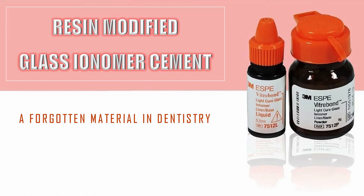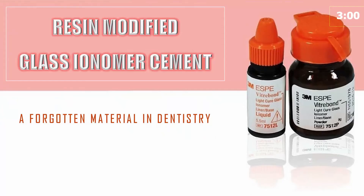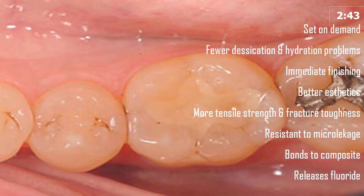In order to overcome the problem of water with GIC, a modified variety was introduced — it is called resin modified glass ionomer cement. Resin modified glass ionomer cement is manufactured by adding resin components to GIC. So a resin modified glass ionomer cement has properties intermediate between composite resin and glass ionomer cement. The addition of resin makes this material set on demand, and it has fewer desiccation and hydration problems with water.